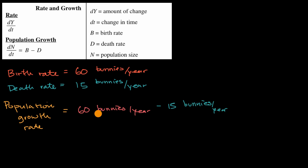And so in that year you would net out 45 bunnies. And that's a rate because you're saying per year. So you would grow by 45 bunnies in that year. And that would be your population growth rate.